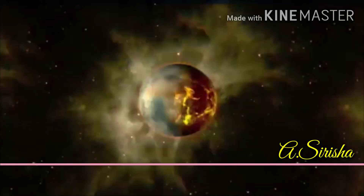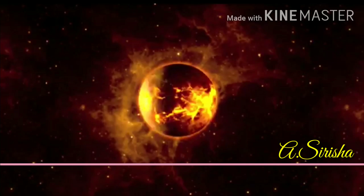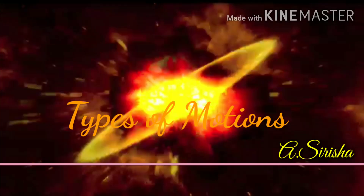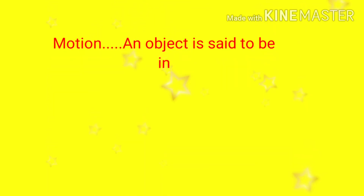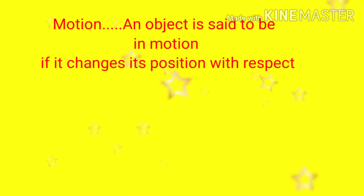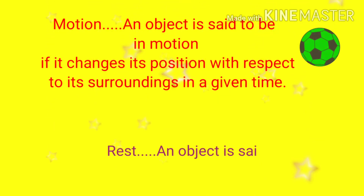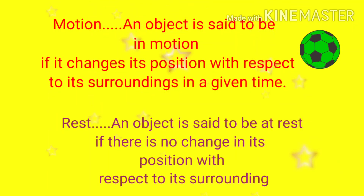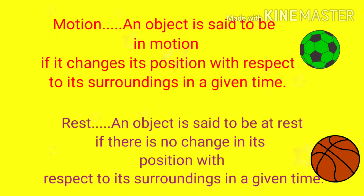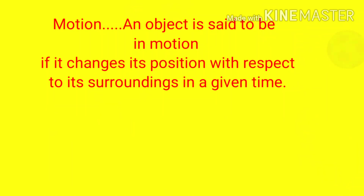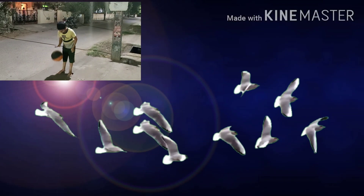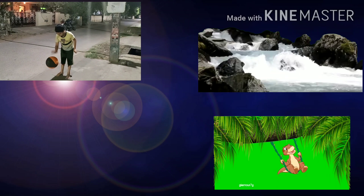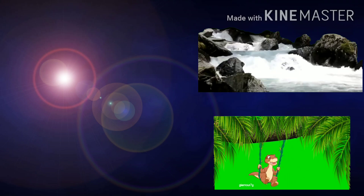Anything that moves is in motion. We see various things moving around us. So today our topic is about types of motion. The green ball is in motion, the orange ball is at rest. Simple examples I can give are children playing with a ball, birds flying in the air, waterfalls, and so on.